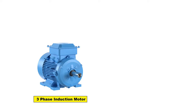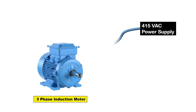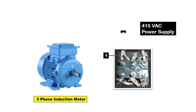Suppose you have a 3-phase motor and you have to run this motor by connecting 3-phase power supply. Now when you go for connection of this motor, you will get total 6 wires on the terminals of the motor for connection. So how to do connection of motor?